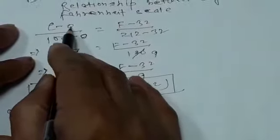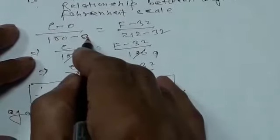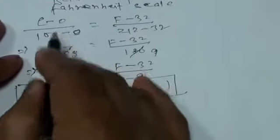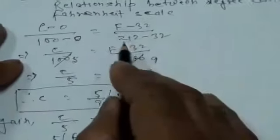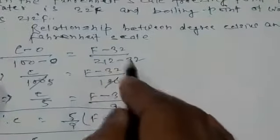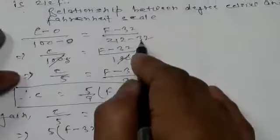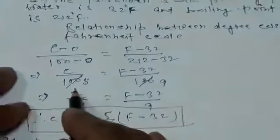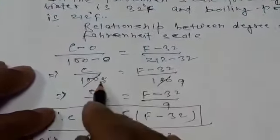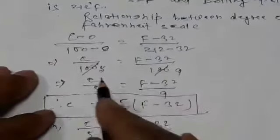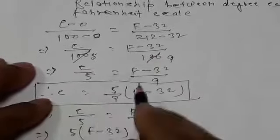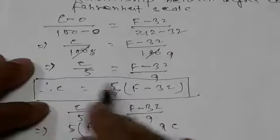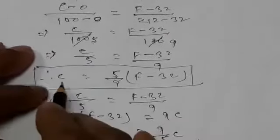Comparing the Celsius and Fahrenheit scales: the lower fixed point in Celsius is 0° and upper is 100°, giving an interval of 100. In Fahrenheit, the lower fixed point is 32° and the upper is 212°, giving an interval of 180. Therefore, C/5 = (F − 32)/9, which gives us C = 5/9 × (F − 32).